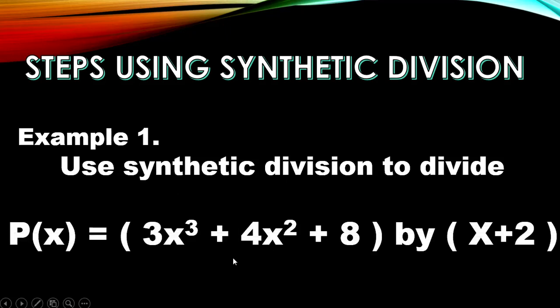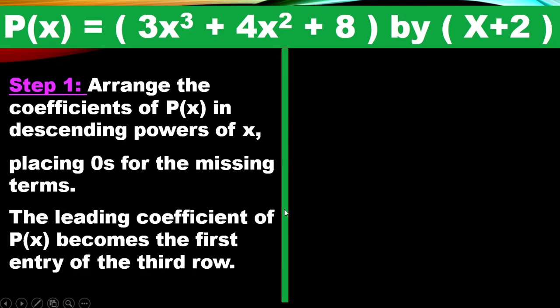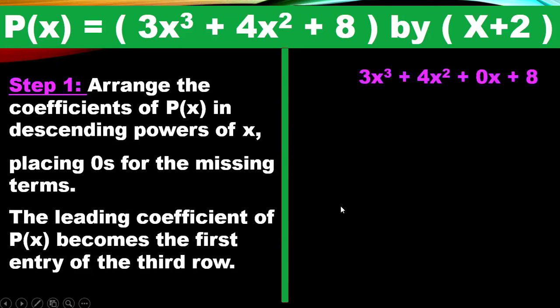Let's look at Example 1: Use synthetic division to divide p(x) = 3x³ + 4x² + 8 by x + 2. Step 1: Arrange the coefficients of p(x), the dividend, in descending power of x — that is, write the polynomial from the highest exponent to the lowest exponent. Place zeros for any missing terms. The leading coefficient becomes the first entry of the third row.